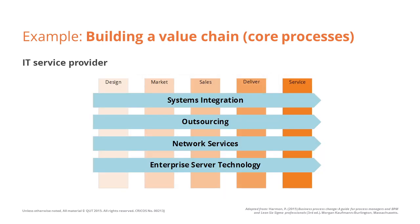The notion of value chain can also be applied for service providers. For example, this IT service provider has four value chains, each capturing a particular core business in the organisation: systems integration, outsourcing, network services, and enterprise server technology. Each value chain refers to a particular customer — for example, systems integration refers to customers in need of software development services, whereas outsourcing refers to customers whose software applications need to be managed by these IT service providers.